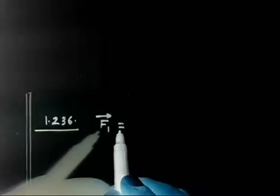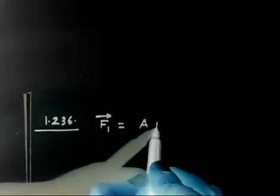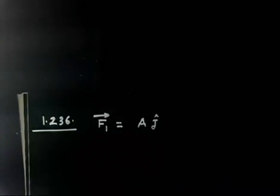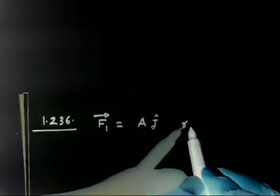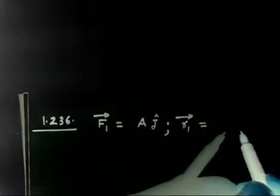Let us discuss the next problem. This is again related to finding moment. This is problem 1.236. The problem gives a force F1 as AJ, applied to a point whose radius vector is AI. So if the force is AJ, the radius vector R1 is AI.